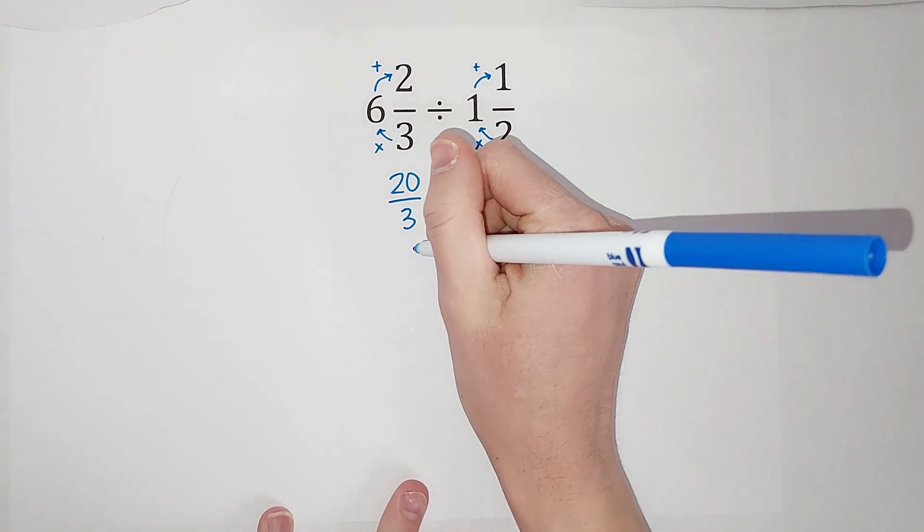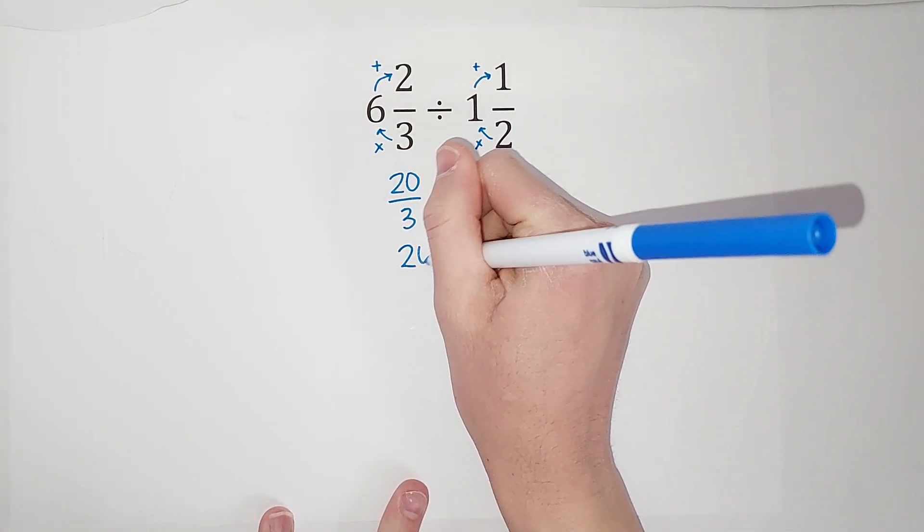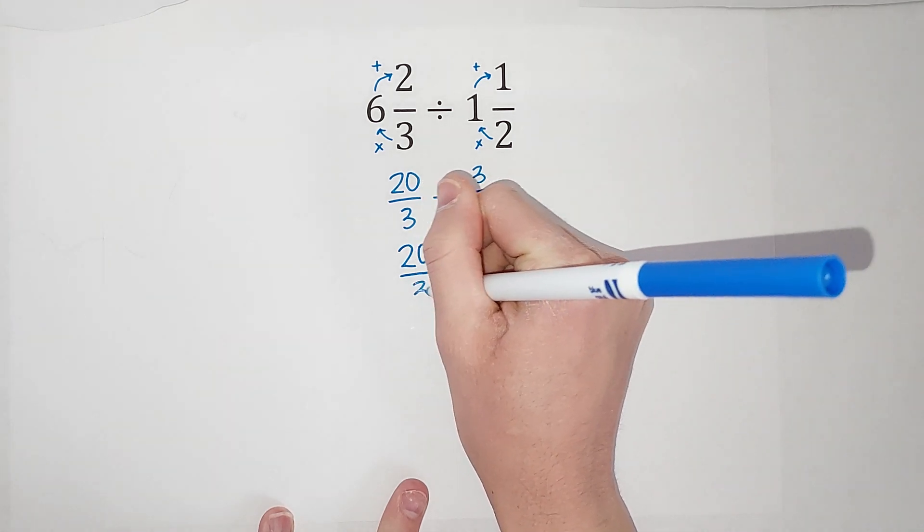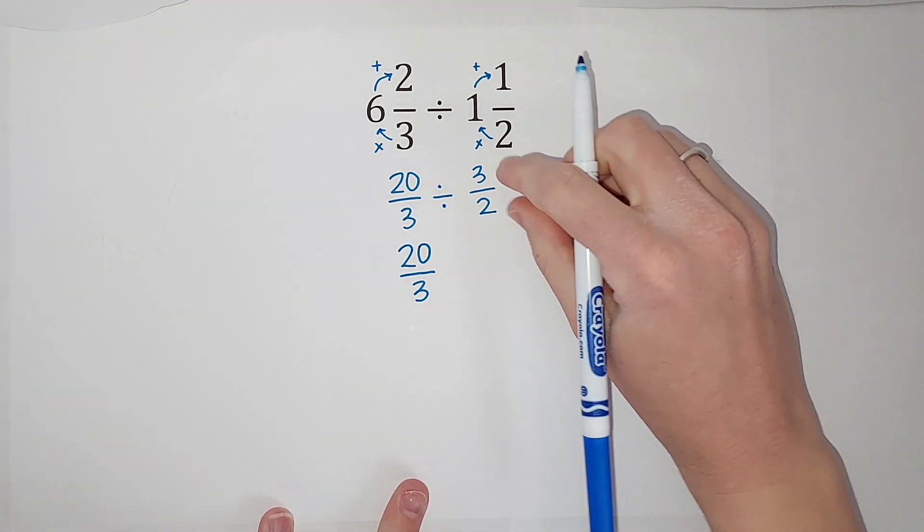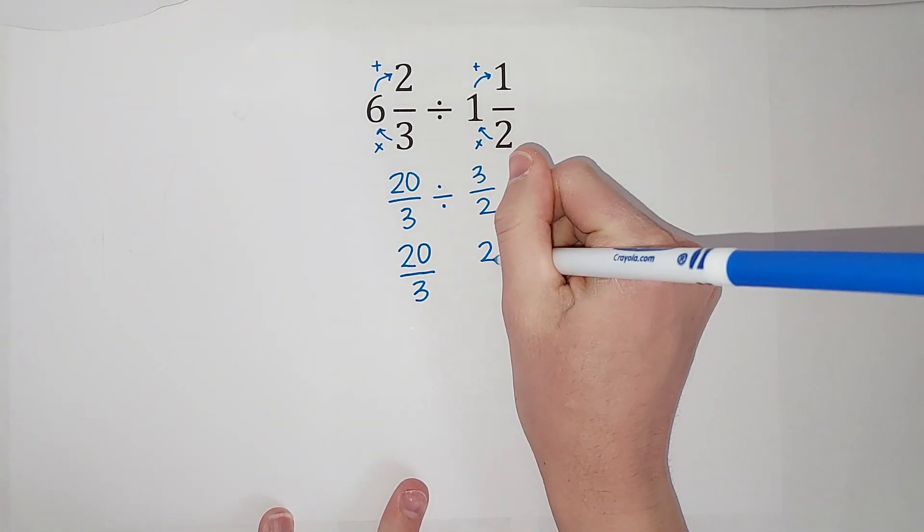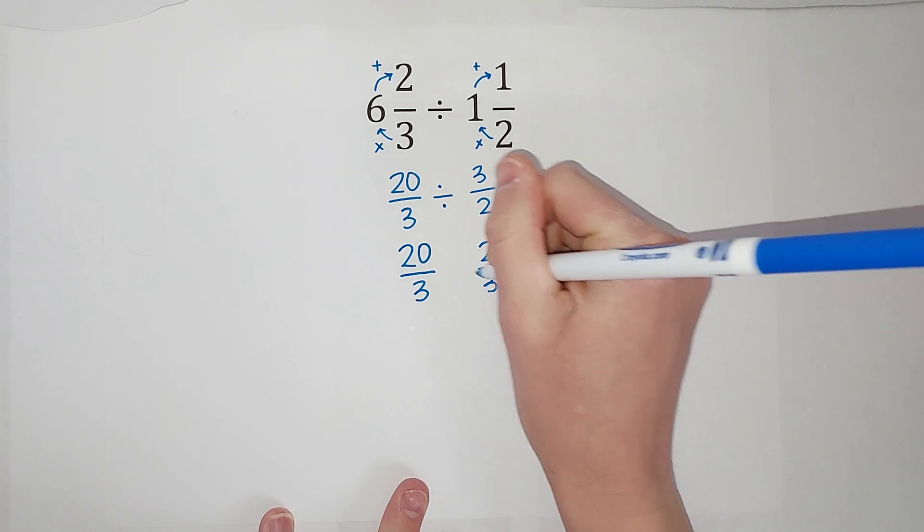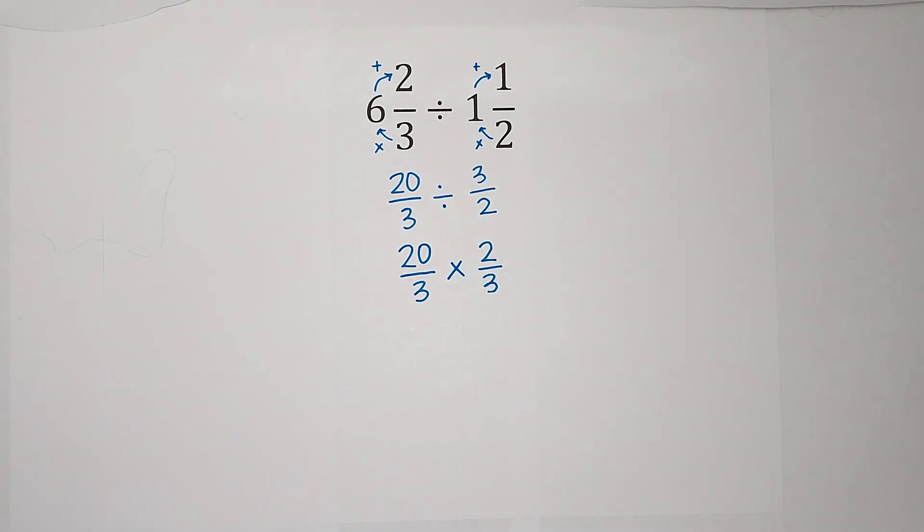So I'm going to have twenty-thirds. When we divide fractions, we flip. So that becomes two-thirds and multiply.